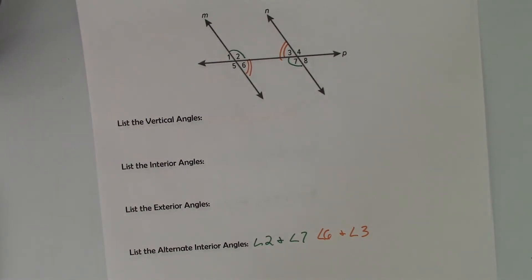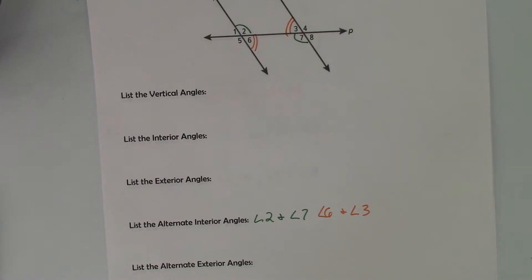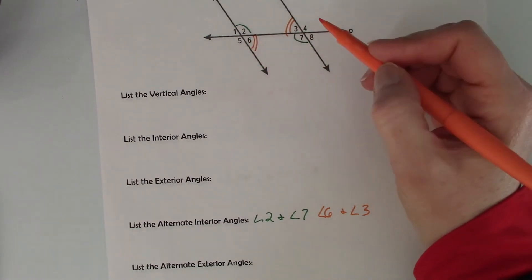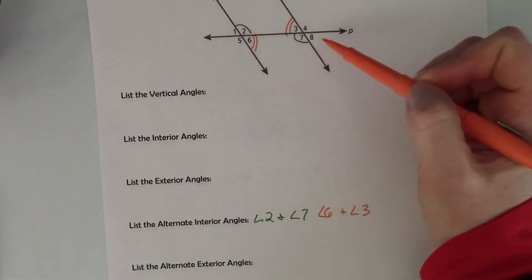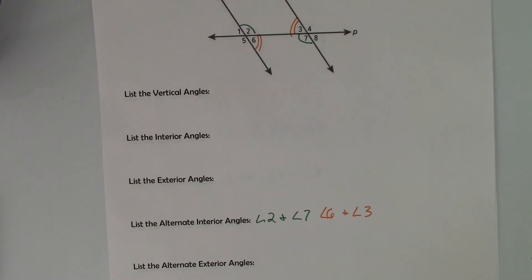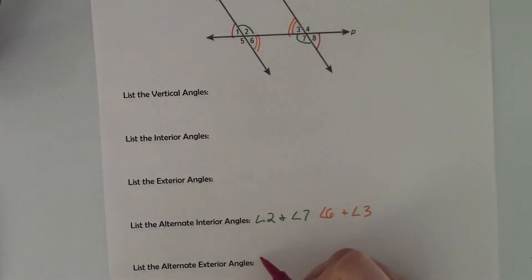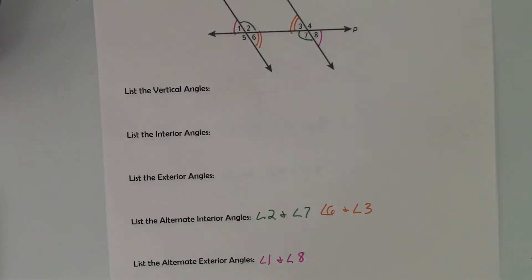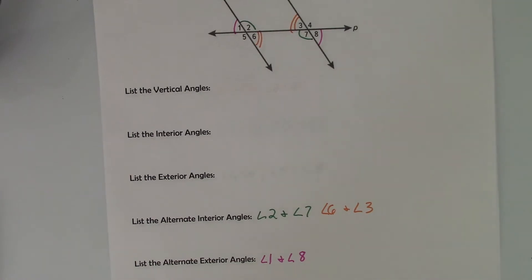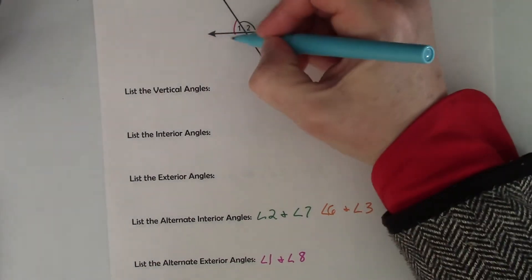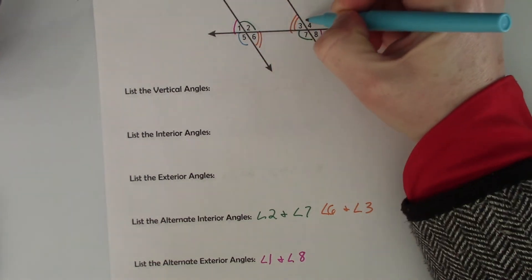Alternate exterior angles — same thing, except they are on the outside of the parallel lines and on the opposite side of the transversal. So angle 1 and angle 8 are alternate exterior angles, and then angle 5 and angle 4 as well.